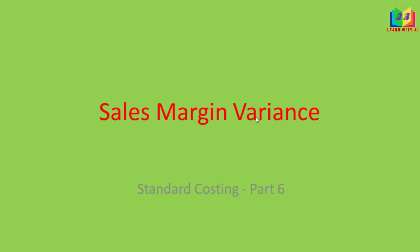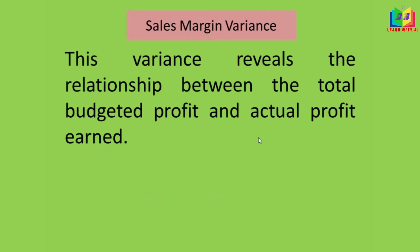In this video we'll see sales margin variance. The sales margin variance explains the relationship between the budgeted profit and the actual profit earned. The budgeted profit is the estimate of the organization, and the actual profit is the profit earned by the organization. This variance is the difference between the budgeted profit and the actual profit earned for a specified period of time.